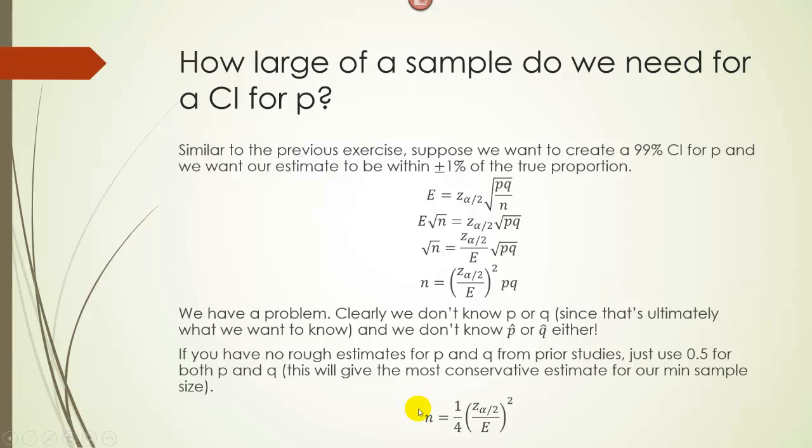So rewriting this formula, this is actually the formula you're going to use. When P and Q are one-half, that's one-half times one-half which is one-fourth, and then we have our z over the margin of error squared. So this is going to be our minimum sample size when dealing with proportions.